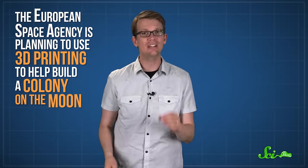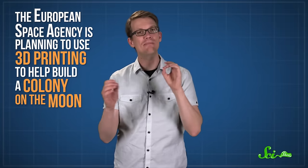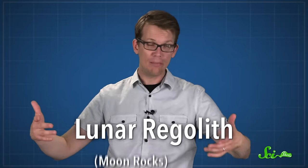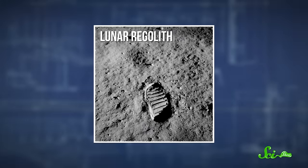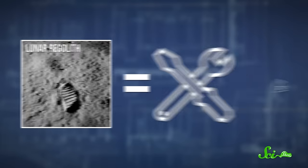And speaking of long-term missions, the European Space Agency is planning to use 3D printing to help build a colony on the Moon. Their plan, which is still in the very earliest stages, is to first send robots to the Moon to collect raw material, the lunar regolith, also known as Moon Rocks. Then giant 3D printers would be sent to use the regolith to make things like tools and even entire buildings.